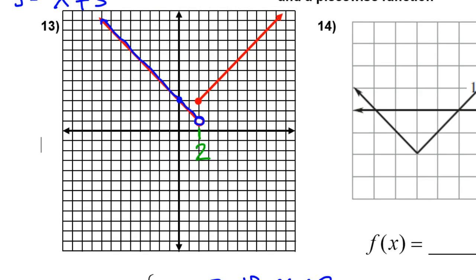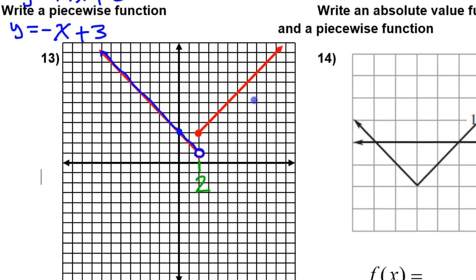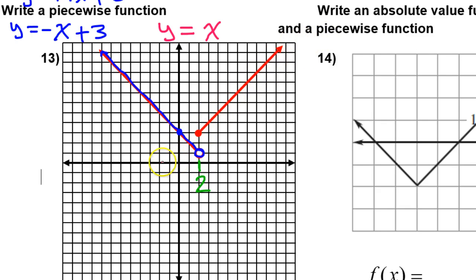Now let's do the red piece. Again, I need an equation, so I'm thinking y equals mx plus b — I need the slope. This seems to be going up one, right one, so it's going to be positive one. One x is just x. Now I need the y-intercept. For the blue one I could just see where it crossed the y-axis, but this ray that starts here and goes to the right does not touch the y-axis. However, the line that goes through it does touch the y-axis, and that's the y-intercept I'm talking about.